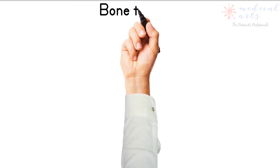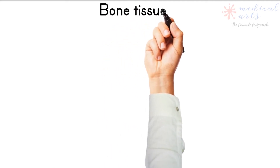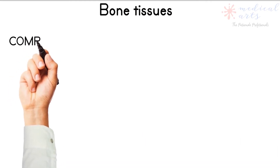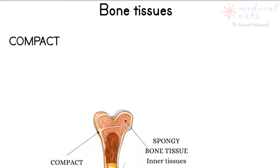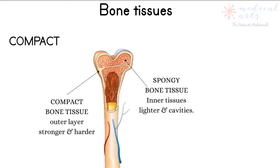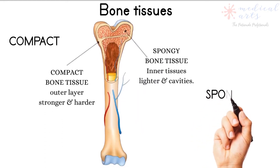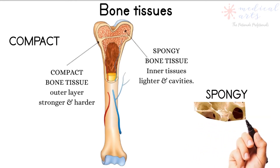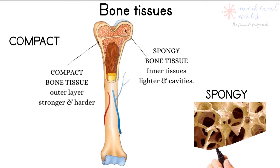Now that we know how the skeletal system is put together, let us explore the smaller unit of this system — the bones. Each bone is made of bone tissues. We recognize two basic types of bone tissues: compact bone, which is dense and highly vascularized, and the spongy bone, characterized by many open spaces that act as storage for minerals and some other cells.